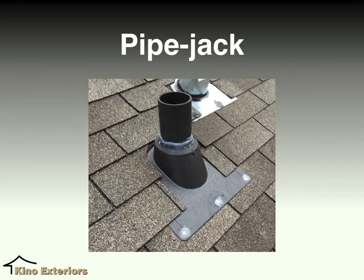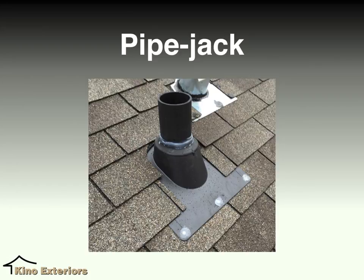Now we're going to be talking about the pipe jack. The pipe jack is a preformed flange that is placed around the plumbing stack. That black PVC that you see in the image is actually part of the plumbing system and is meant to be open that way. The pipe jack is the flashing that helps the pipe transition from the inside of the house to the exterior. They come pre-made, to size, in different sizes, and basically they all come in plastic for asphalt shingle applications.